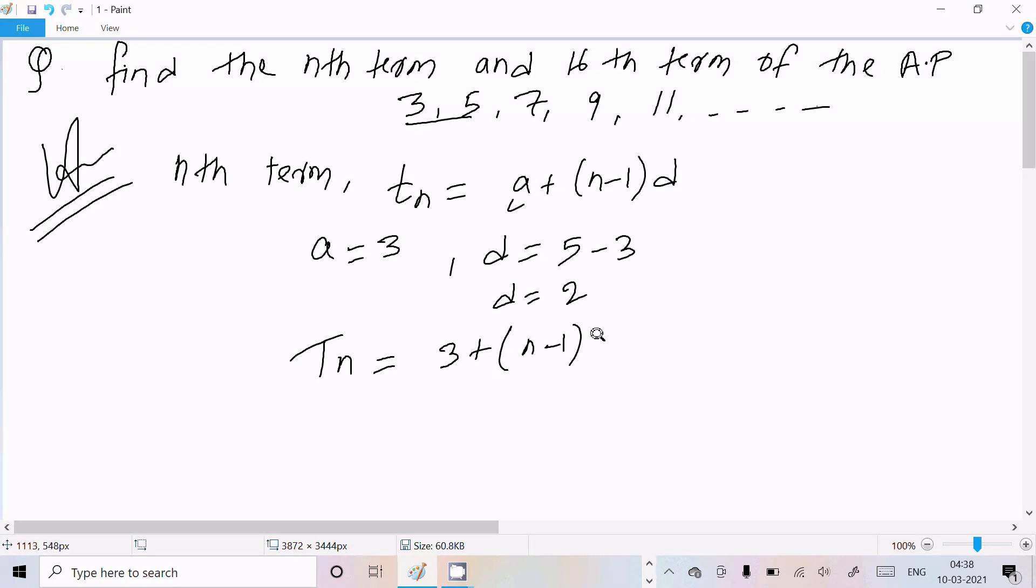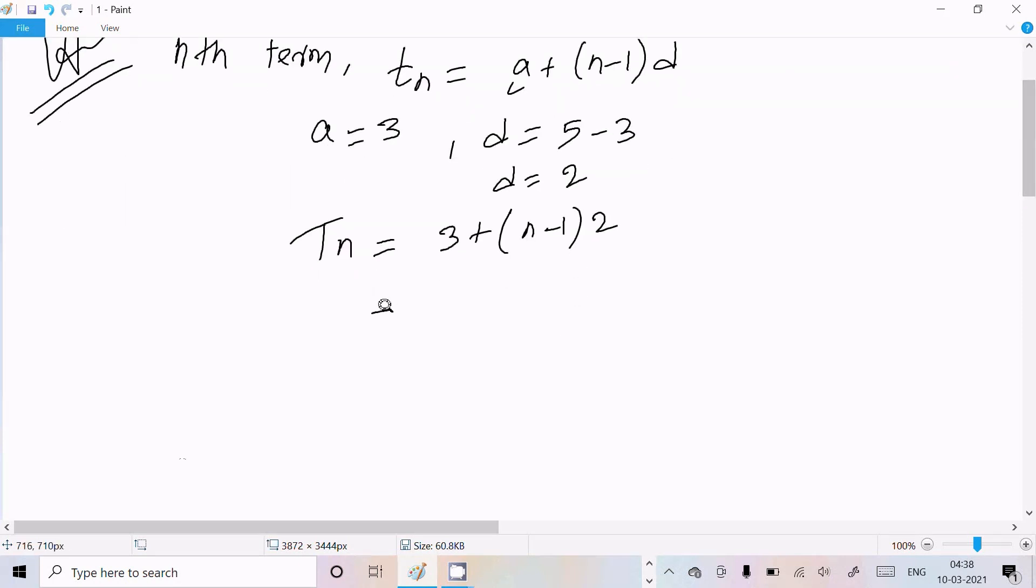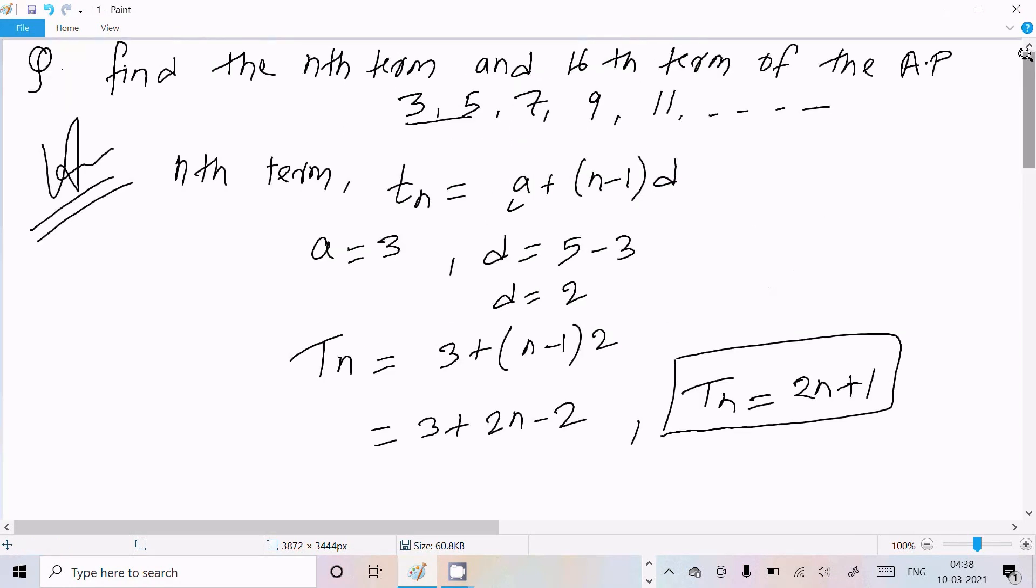Now let's calculate Tn. So 3 plus n minus 1, and the d value is 2, so here 3 plus 2n minus 2. Tn equal to 3 minus 2, the value comes 1. So the nth term of the AP 3, 5, 7, 9 equal to 2n plus 1.